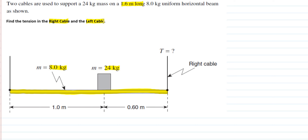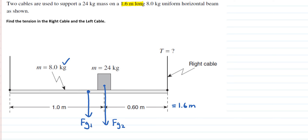This is a different kind of equilibrium problem because we'll be dealing with both torques and forces. Let's start by drawing a free body diagram. The beam has a center of gravity in the middle, labeled FG1, and the 24-kilogram object also has a gravitational force, FG2. The cables have tension forces: FT1 on the left and FT2 on the right.